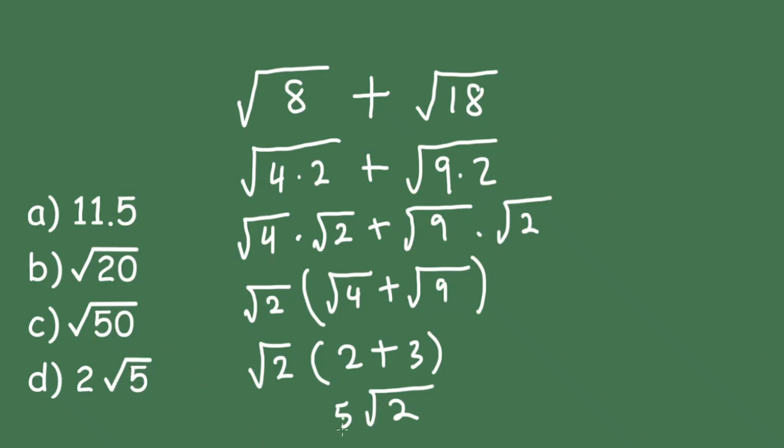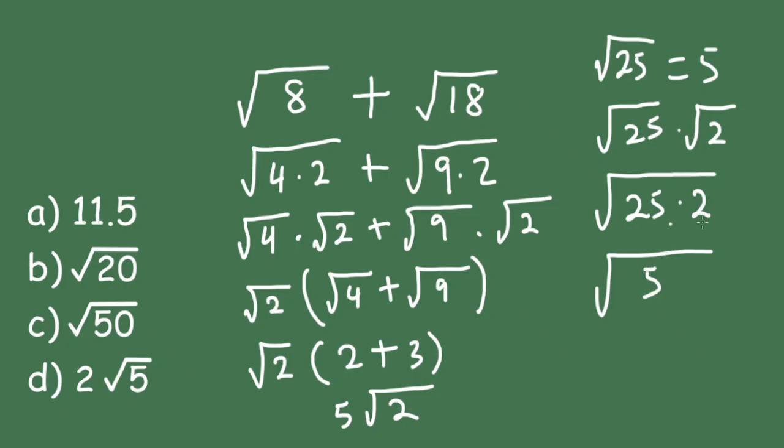But this 5 here can be written as square root of 25. So that's equal to 5. So we write this as square root of 25 times the square root of 2. So this can be written as the square root of 25 times 2. And this is the square root of 50, 2 times 25. And that is answer C.